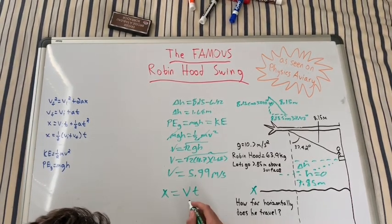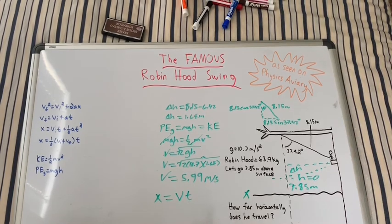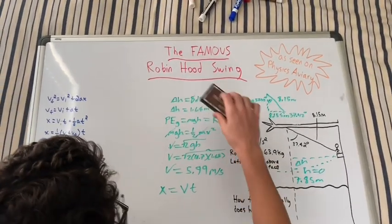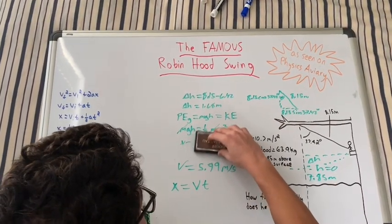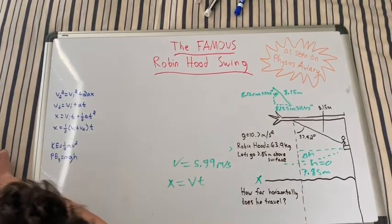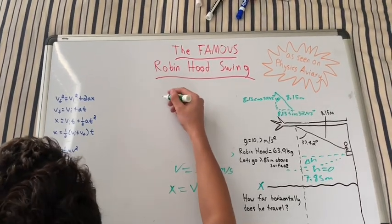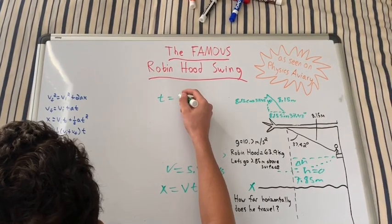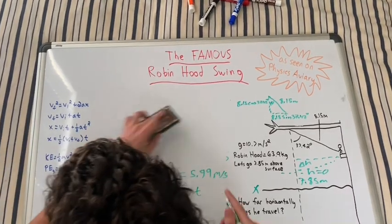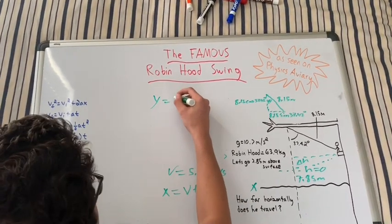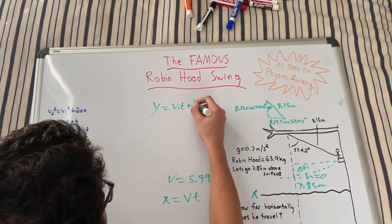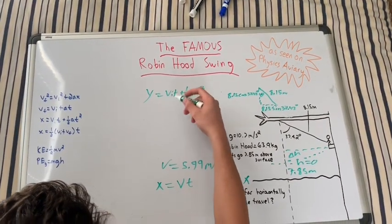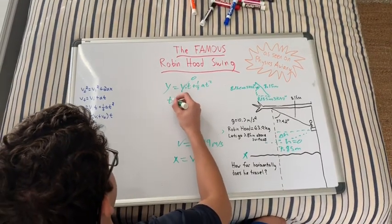So we're going to have to figure out the time, and to do that we can just use this third equation. We have our velocity, so we need to find the time. Let's rearrange this equation. We're acting in terms of y since we're trying to find the time, so it's going to be y = v_i t + 1/2 at². Since he doesn't have any vertical velocity initially, this goes to zero, and then we can get this equation: t = √(2y/a).